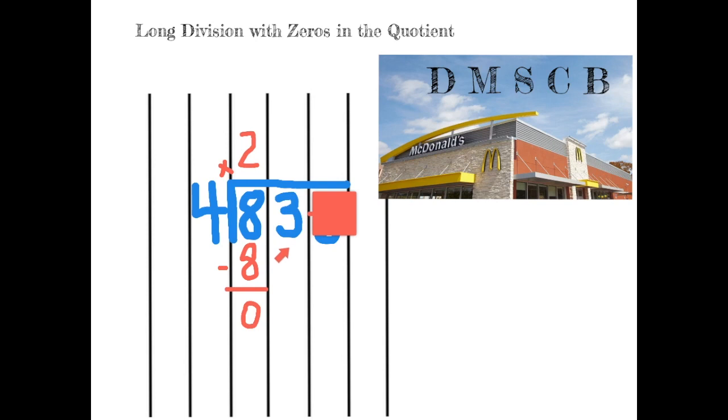The next step is to check and see if we have something to bring down. As you see, we do. We need to bring down the 3. I also think it's easier to drop down the 4, which is our divisor, and create a new house subdivision.